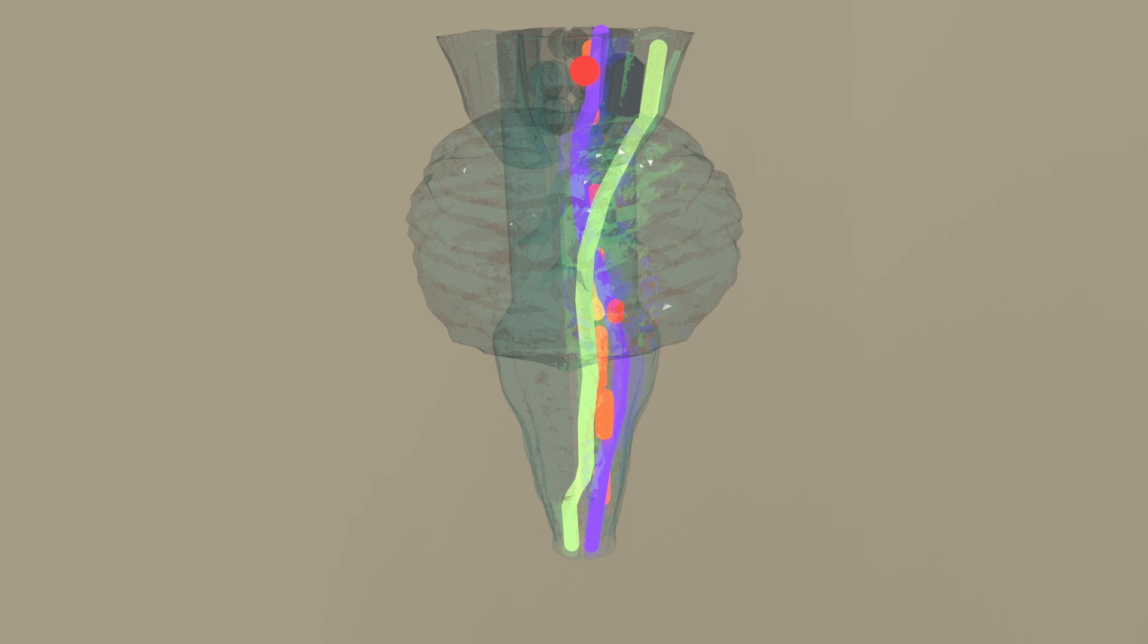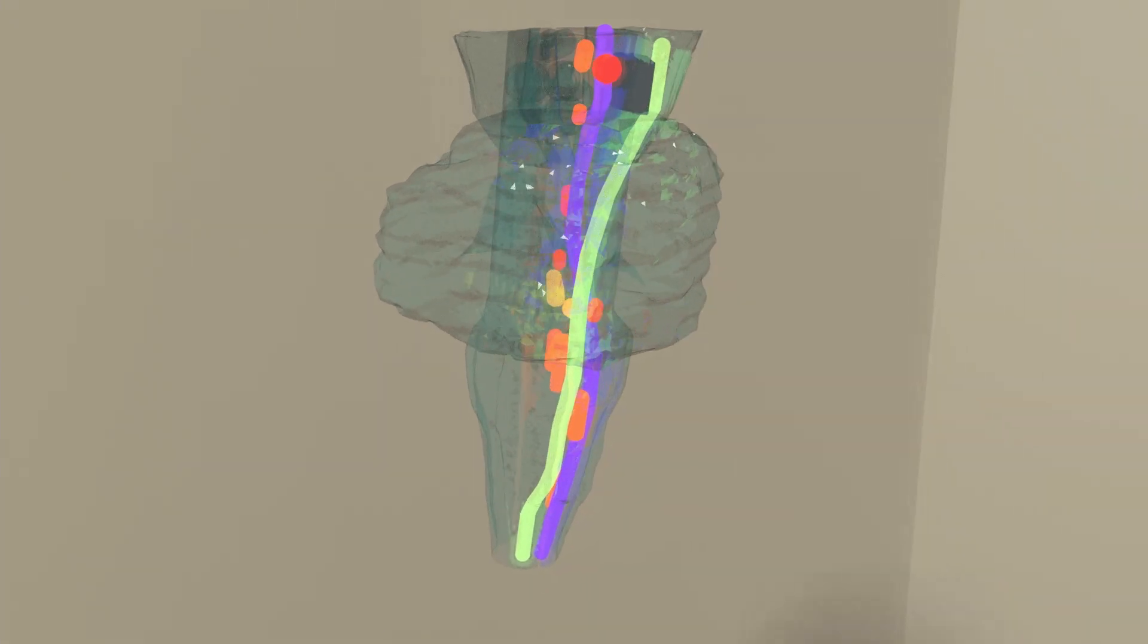What we can see from this model is the outlines of the medulla oblongata, most inferior, with the pons in the middle and mesencephalon most superior, and the structures that we're going to be looking at.